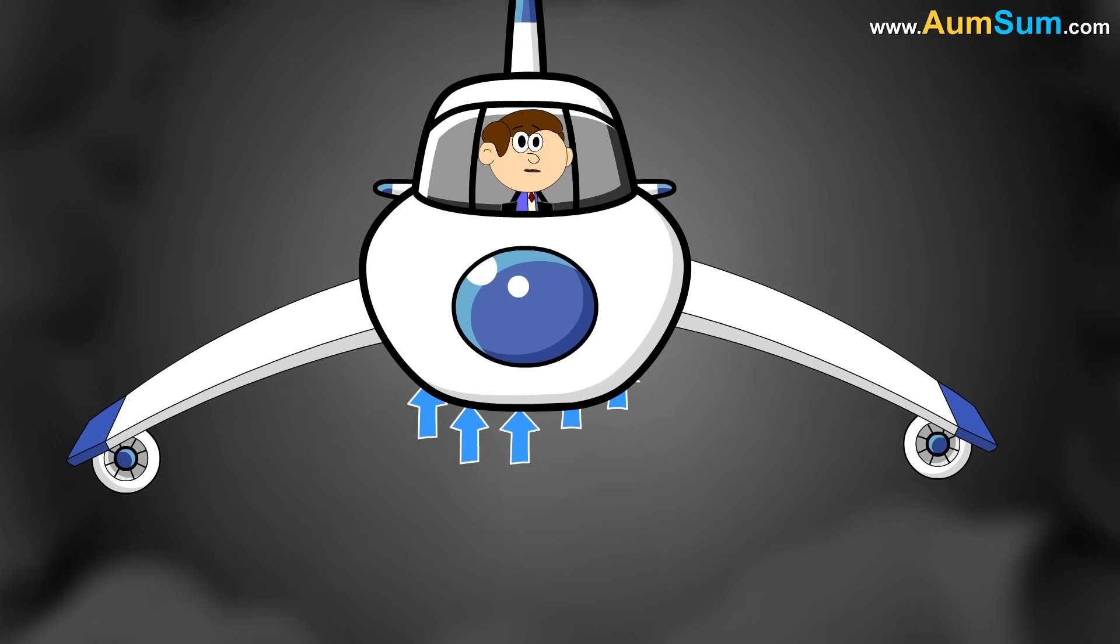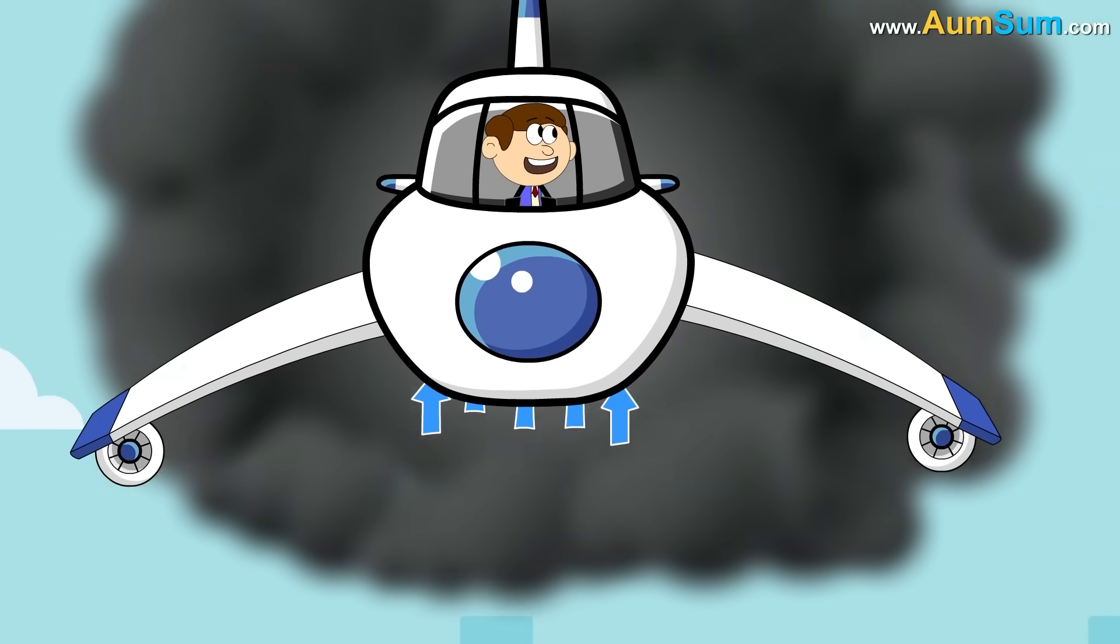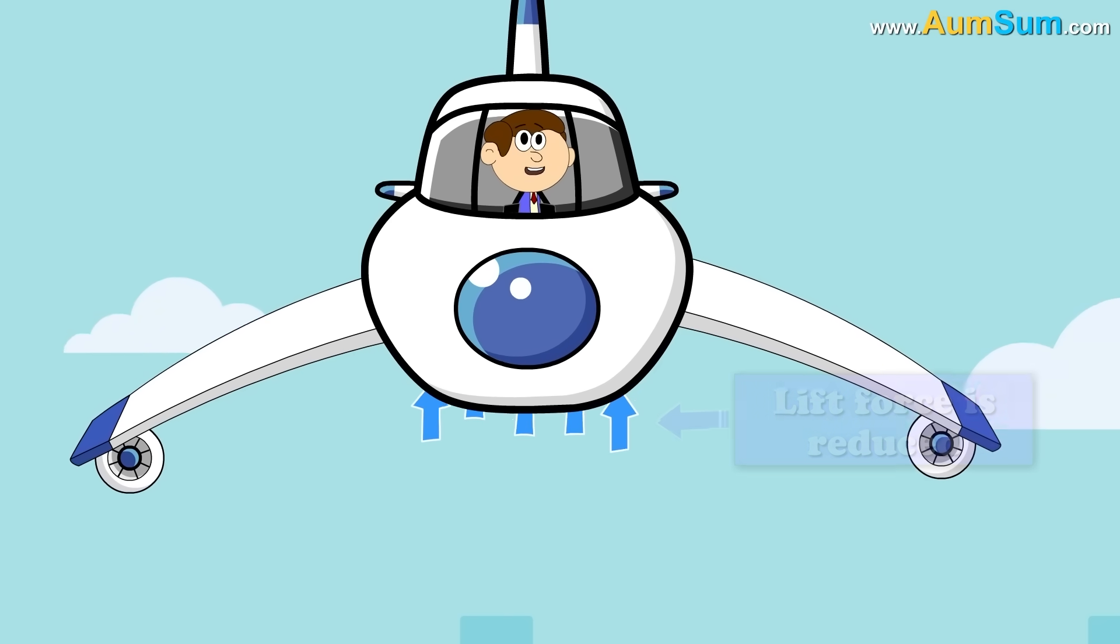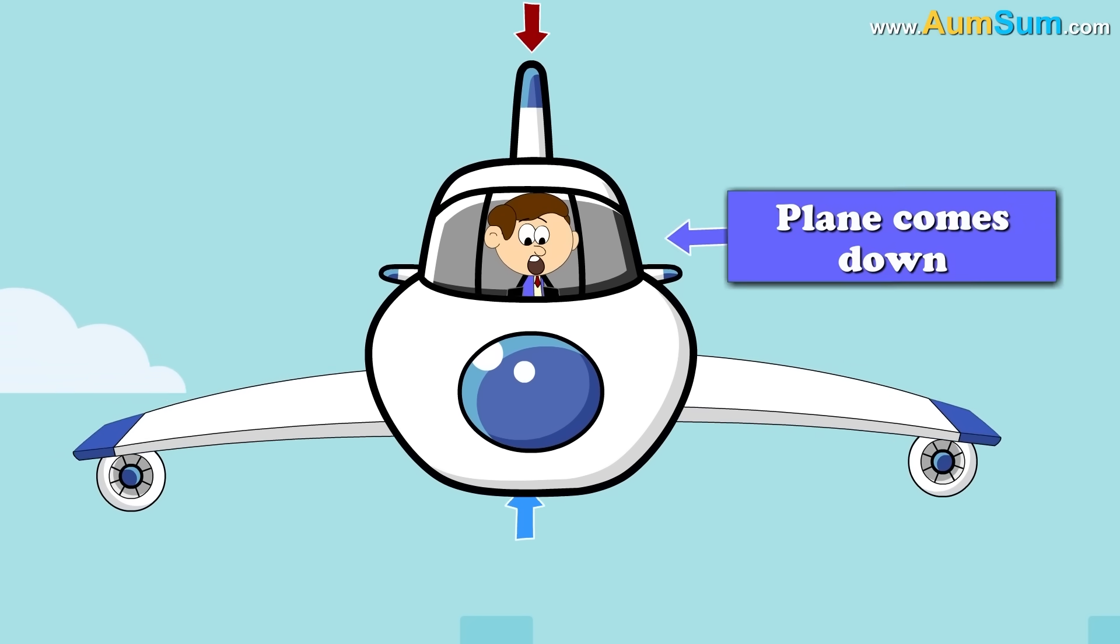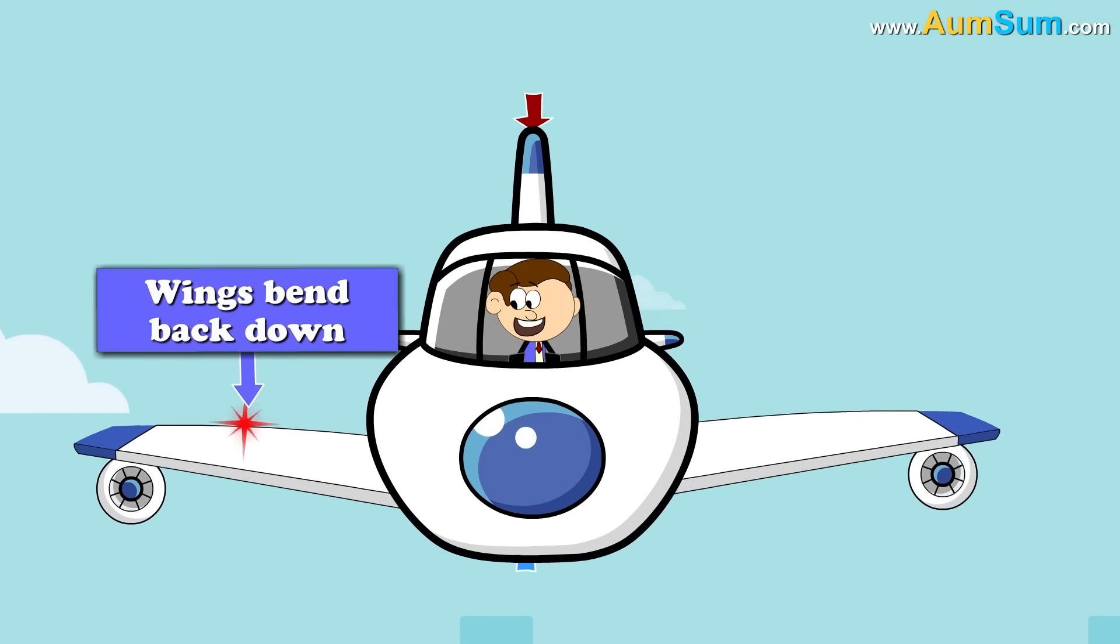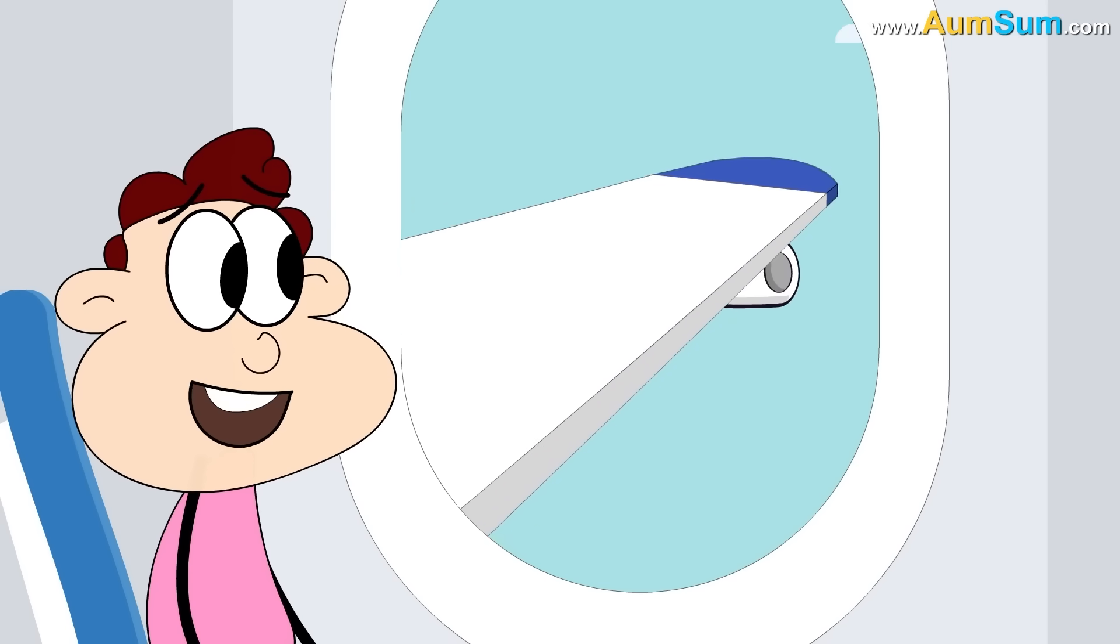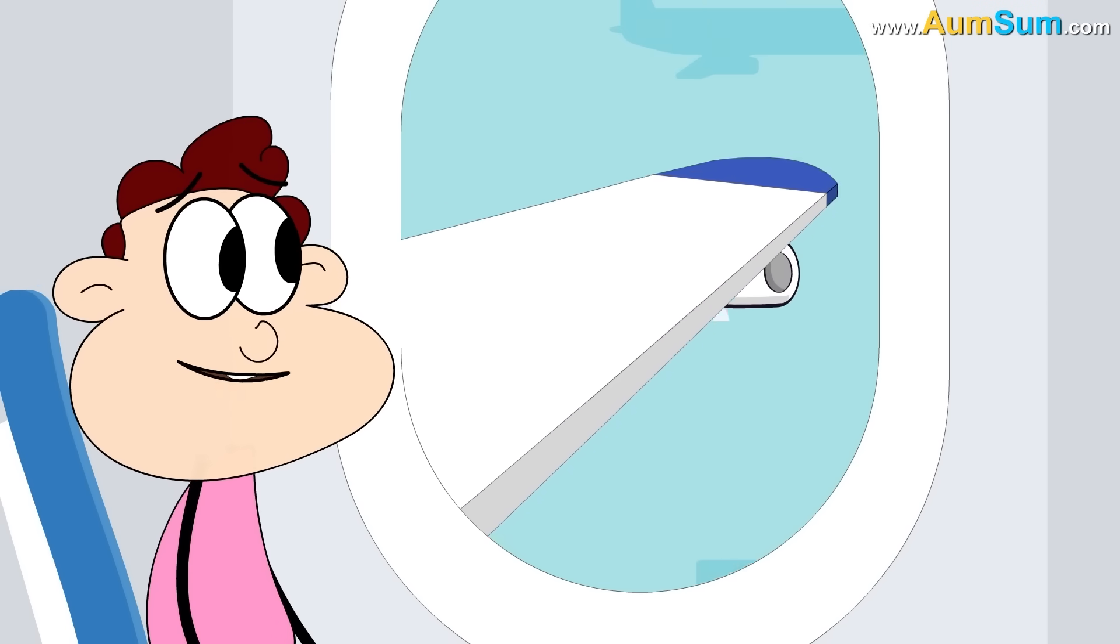Now if the plane enters an area of lower density, as in it comes out of the cloud, then the lift force is reduced. As a result, the plane comes down. Its wings bend back down. This sudden change in lift force is what causes the plane wings to wobble.